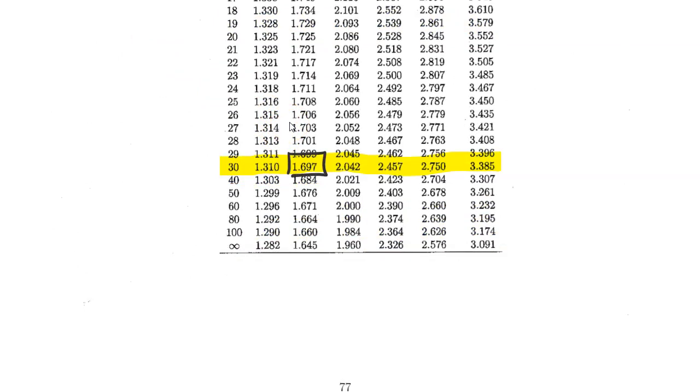I want to point out to you that as n and df increase, the difference between the values in each row gets smaller and smaller. In fact, when you get to quote-unquote df equals infinity, this just means really high df.